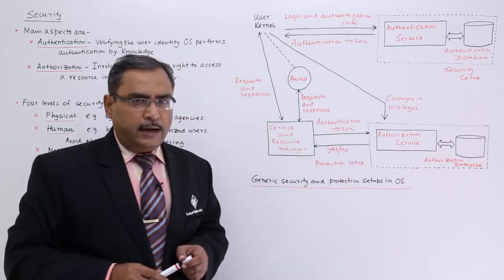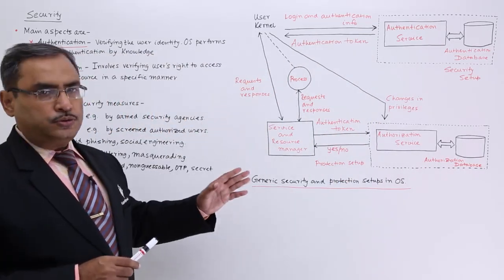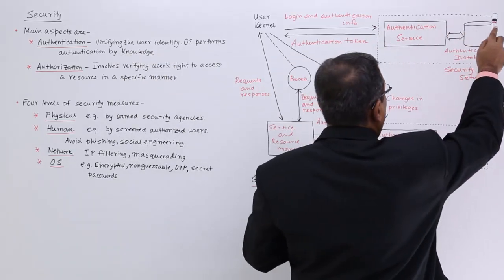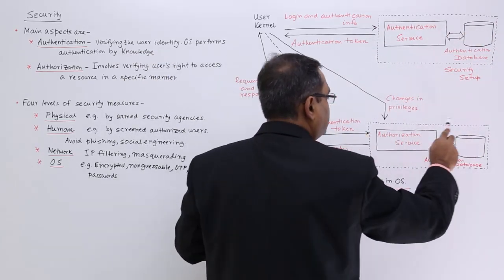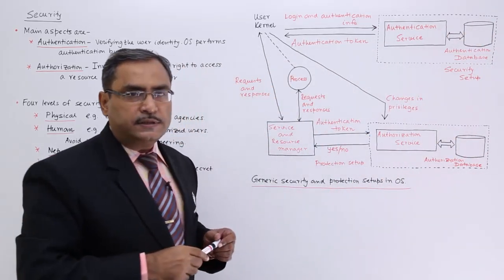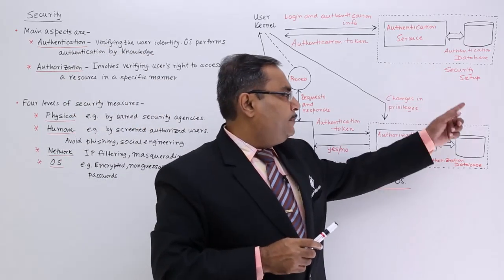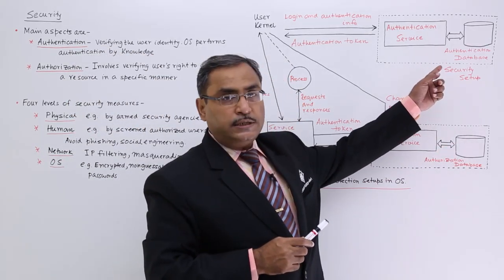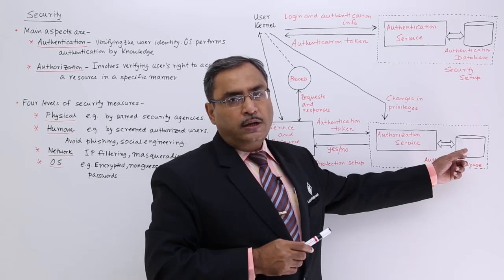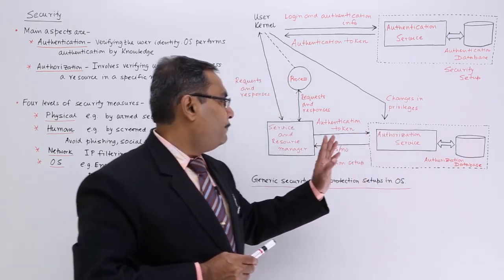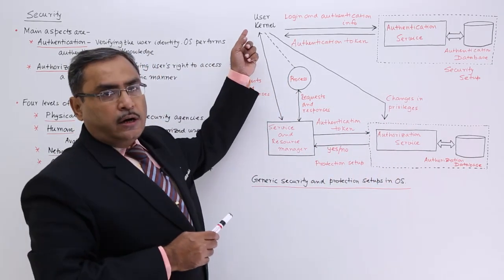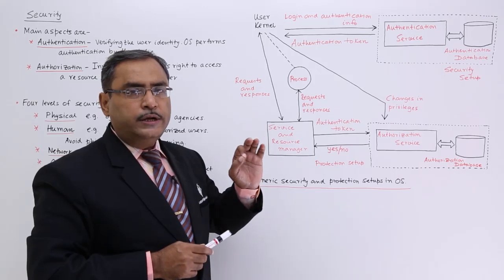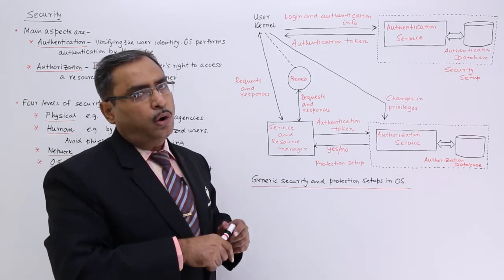In this particular diagram, I have tried my level base to put all the aspects here. So this section is for the authentication service and this section is for the authorization service. We shall be having the respective databases here. So authentication database and here we will be having the authorization database. Now this is my user kernel, you know that kernel or nucleus is the core part of the operating system.